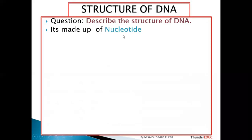Nucleotides are the monomers, the building blocks of DNA. All individuals have the same type of DNA, but this DNA is different — that's why you have different characteristics. How is this possible, yet all DNA is made up of the same kind of nucleotide? Here is the question.